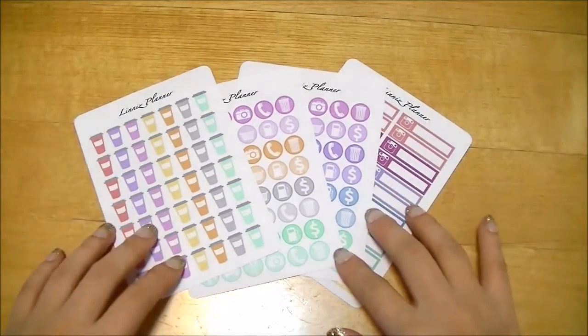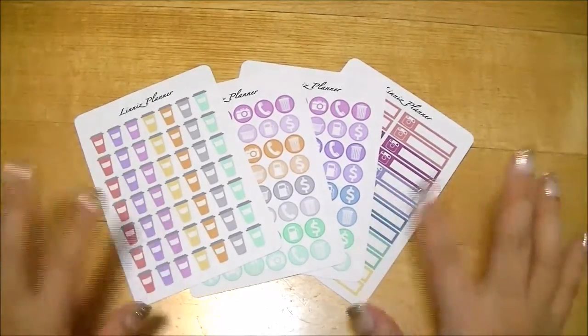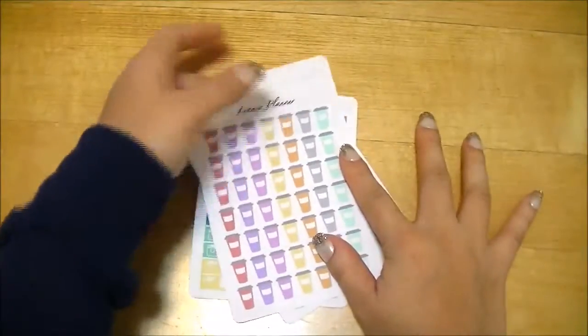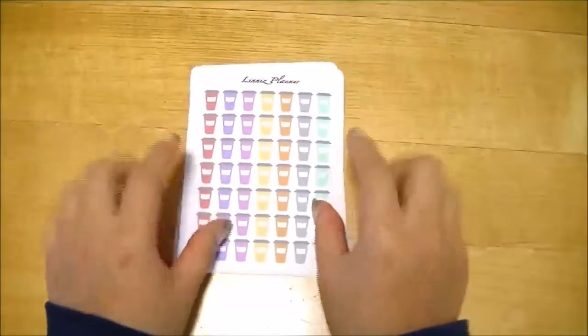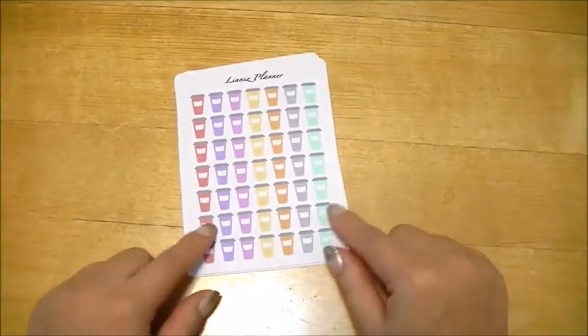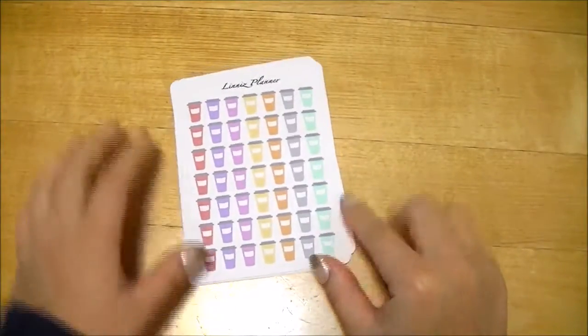So this one is a shop called Anis Planner. It's a Swedish shop. I think I posted it on my Instagram. First time buying from a Swedish seller and she had 50% off, so I thought it would be nice for me to be able to try out her stickers. So I only got a few items.